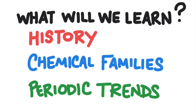So what are we going to learn in this lesson? First we'll learn the history of the modern periodic table. Then we'll learn the properties of some of the chemical families on the periodic table. And finally we'll learn how the periodic table can be used to predict the properties of elements according to patterns and trends.